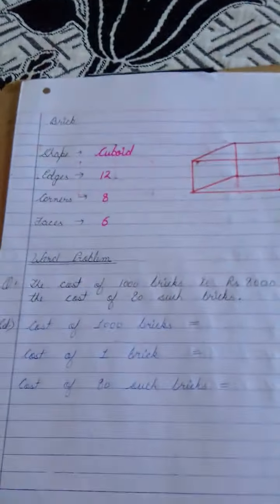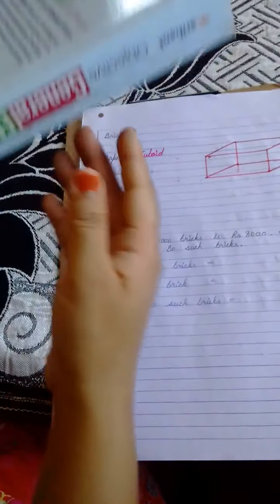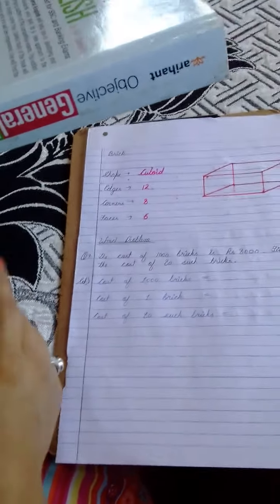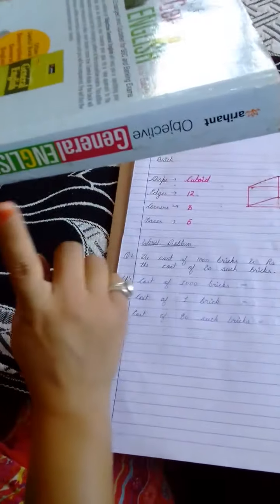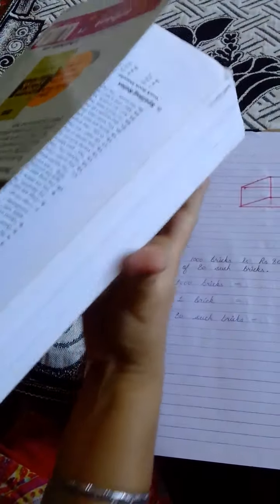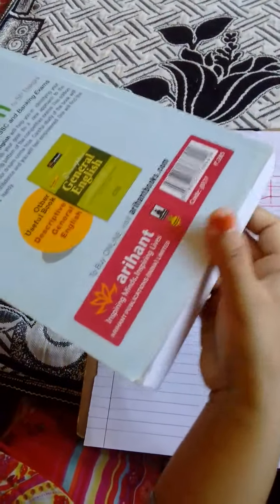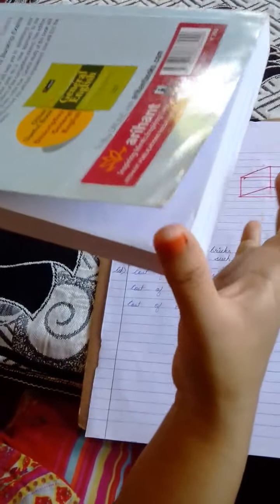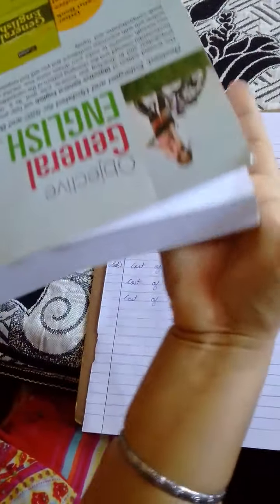Suppose let me show you with the example of this book. This book is in the shape of a brick children. See how many edges does it have? 12. One, two, three, four, five, six, seven, eight, nine, ten, eleven and twelve.